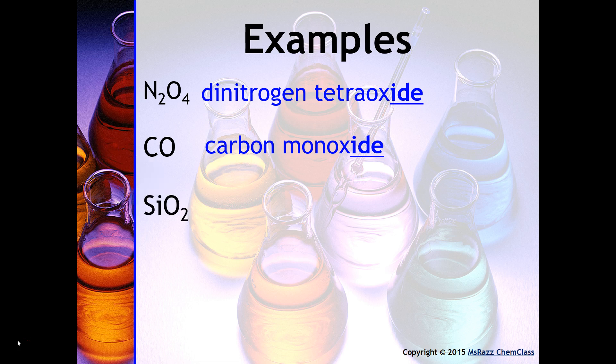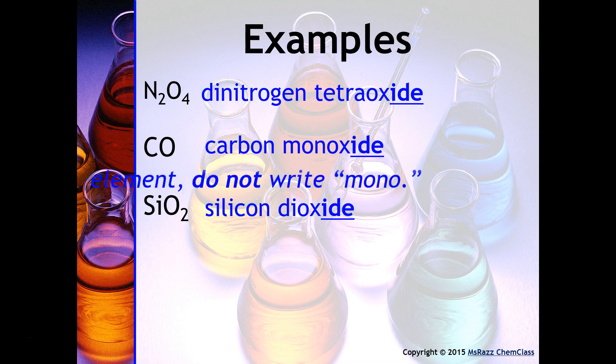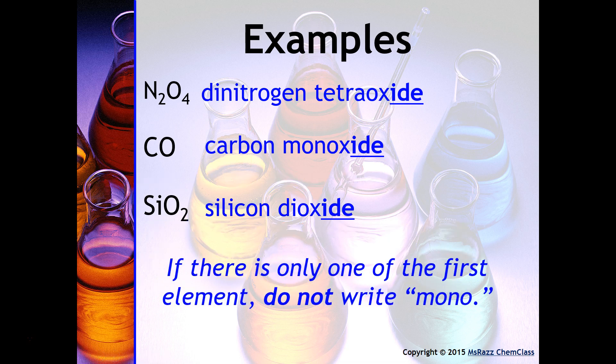The rule of thumb is you do not want to add the word mono to the first element, only to the second. So for example, this would not be called monosilicon dioxide. Instead, this is just called silicon dioxide. So again, if there's only one of the first element, do not write the word mono.